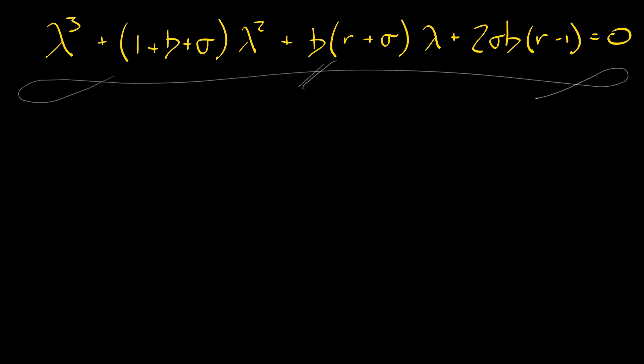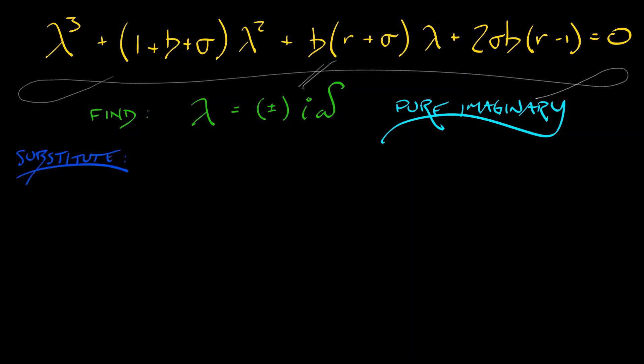But in the case of a Hopf bifurcation, we know that this is going to occur when we have a pair of pure imaginary eigenvalues, something of the form lambda equals plus or minus i times omega for omega some constant. In this case, what we can do is look for those pure imaginary eigenvalues by substituting that into the characteristic polynomial. Let's do that.